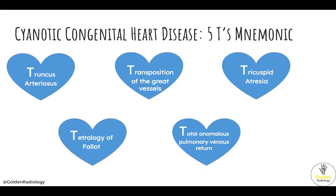Here are the five T's of congenital heart disease. Truncus arteriosus occurs due to failure of the aorticopulmonary septum to form and split the truncus into the pulmonary artery and the aorta. As a result, you have one common trunk.